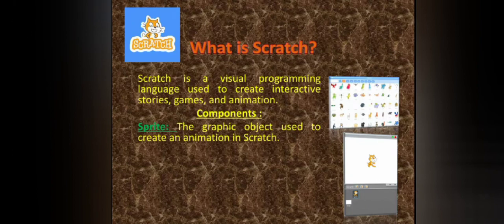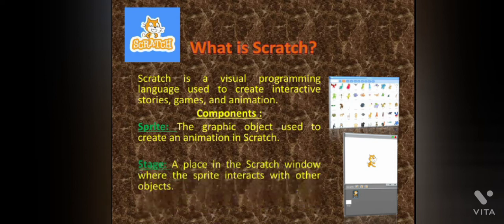The components of Scratch. First is a sprite — the graphic object used to create an animation in Scratch. Next is the stage — a place in the Scratch window where the sprite interacts with other objects.